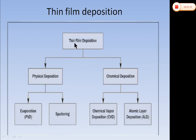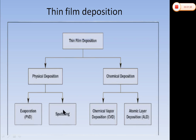What do we mean by thin film deposition? There are two types of thin film deposition. The first one is physical deposition and the second one is chemical deposition. There are further two types of physical deposition: the first is evaporation, which is PVD — physical vapor deposition — and the second is sputtering, which is our concerned topic of the day.